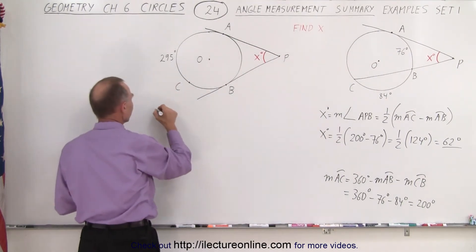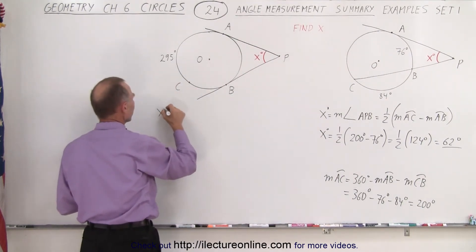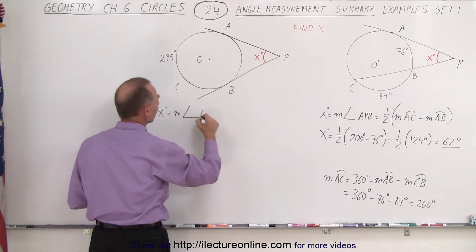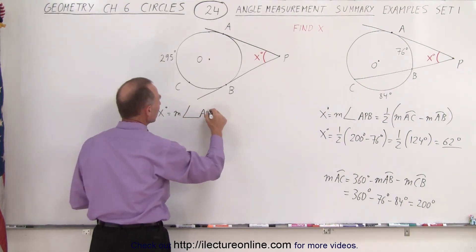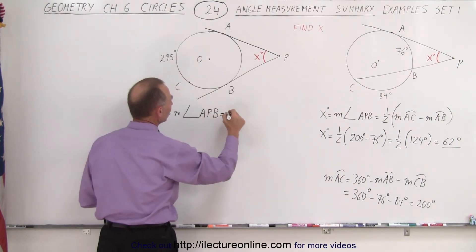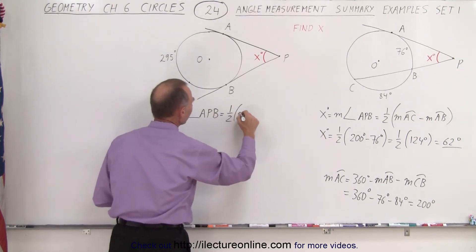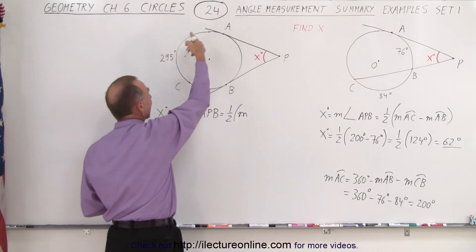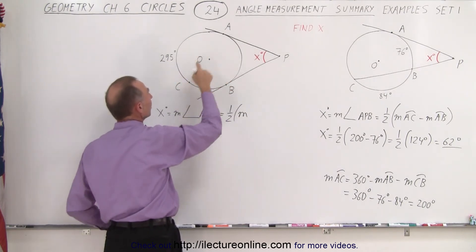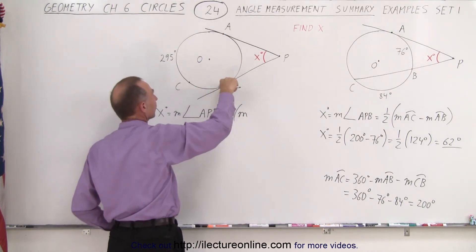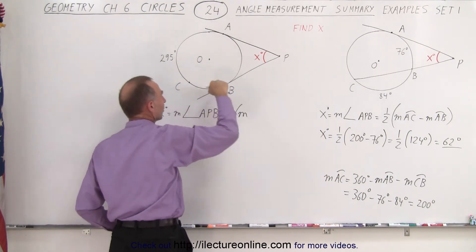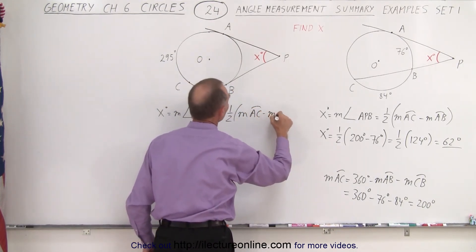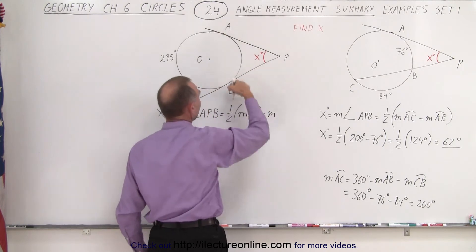So again, what we can say is that x degrees is equal to the measure of the angle from A to P to B, which is equal to one-half the measure of the arc length — we want the entire arc length from A to C, so it would be arc length from A to C, minus the measure from A to B.